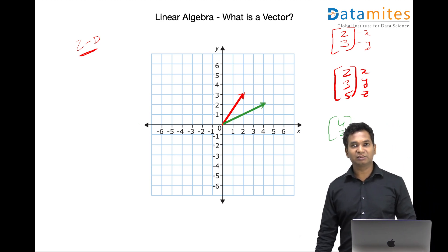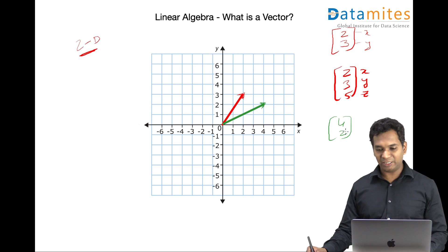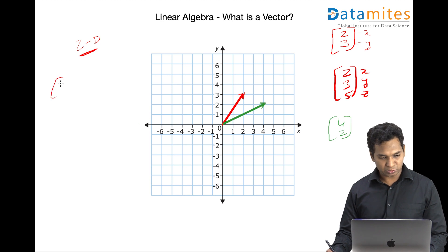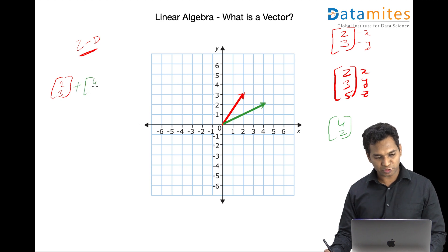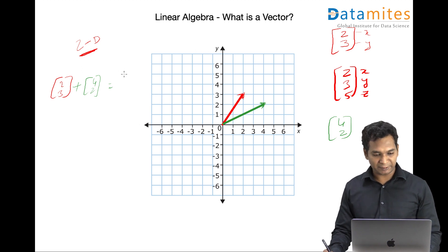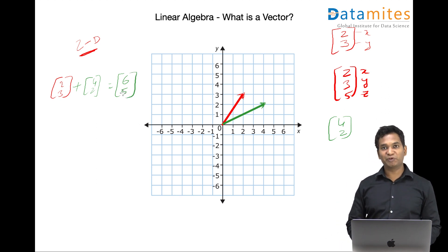If you want to add these two vectors, then the way we do in vector addition is pretty straightforward. So we say two, three plus four and two. And we add the corresponding variables x to the x and y to the y. This results in six and five.